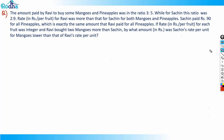This question says the amount paid by Ravi to buy some mangoes and pineapples was in the ratio 3:5, while for Sachin this ratio was 2:9. The rate in rupees per unit per fruit for Ravi was more than that for Sachin for both mangoes and pineapples. Sachin paid rupees 90 for all pineapples, which is exactly the same amount that Ravi paid for all pineapples. If the rate per fruit was an integer and Ravi bought two mangoes more than Sachin, by what amount was Sachin's rate per unit for mangoes lower than Ravi's rate per unit?